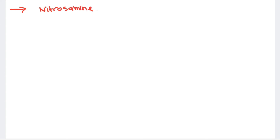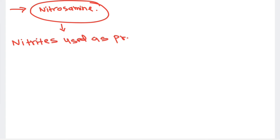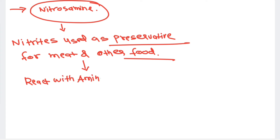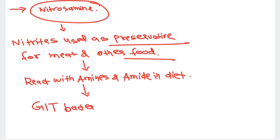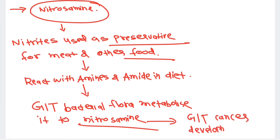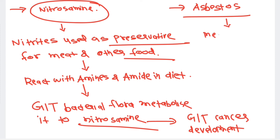Nitrosamines are another cancer-causing agent. Nitrites are commonly used as food preservatives, especially for meat. When we consume food containing these preservatives, the nitrites react with amines and amides in the diet. In the gastrointestinal tract, bacterial flora metabolizes them into nitrosamines, which can cause gastrointestinal cancer, especially colon carcinoma.